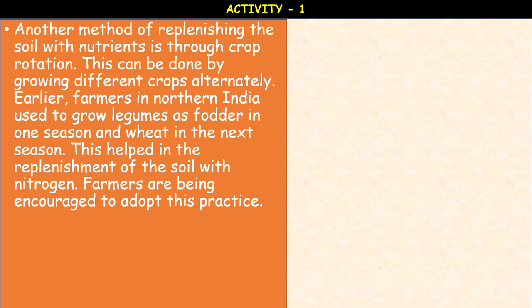Crop rotation is growing different crops on a rotational basis on the same land. In the first year, shallow-rooting cereal crops such as wheat are grown. This is followed in the second year by deeper-rooting crops such as potatoes. In the third year, barley or oats may be grown, followed in the fourth year by legume plants like pea or soybean, which fix nitrogen in the soil and help increase soil fertility.